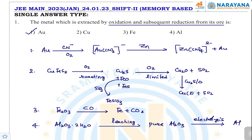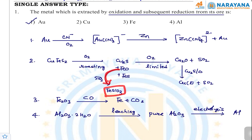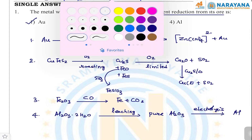Looking at the other options: copper is extracted mainly from chalcopyrite, which is subjected to partial roasting to give FeO, Cu2S, and some unreacted FeS. The FeO formed reacts with silica to form slag FeSiO3, leaving copper matte (Cu2S and FeS). This is further partially roasted to give Cu2S, and the leftover Cu2S on further heating with Cu2O gives blister copper.